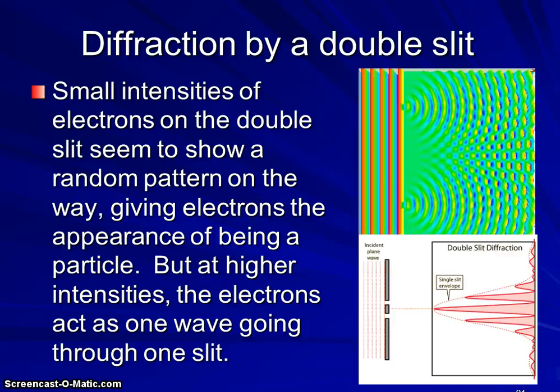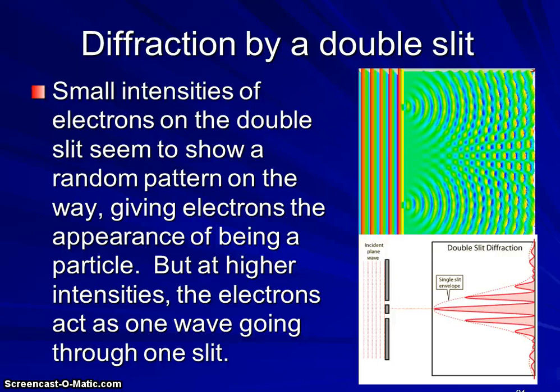But when we send them through very quickly, when we send a high intensity group of electrons through, what we see is the exact pattern we would expect were we sending light through very narrow slits. We see a diffraction pattern that mimics what we would see explaining electrons as waves.